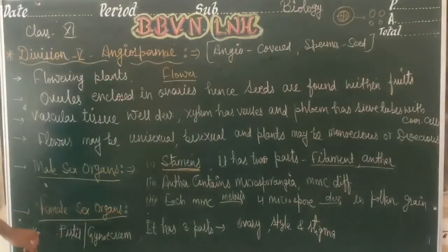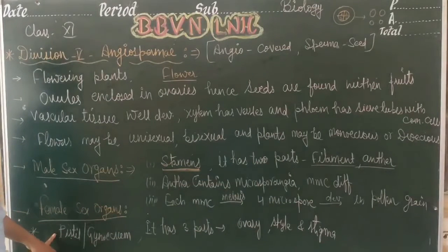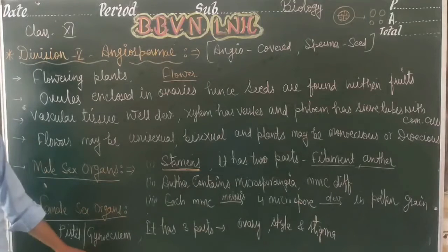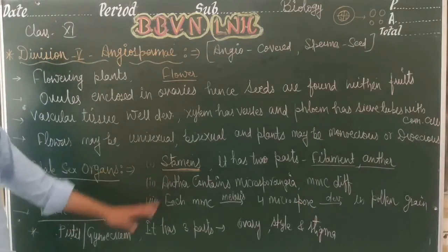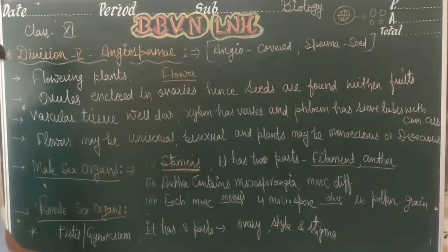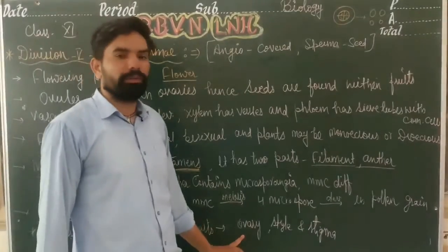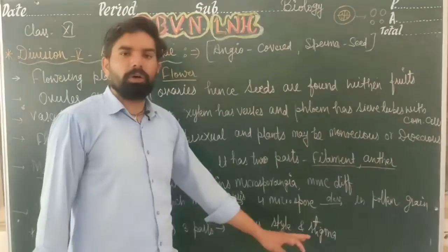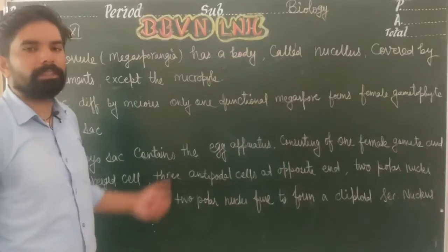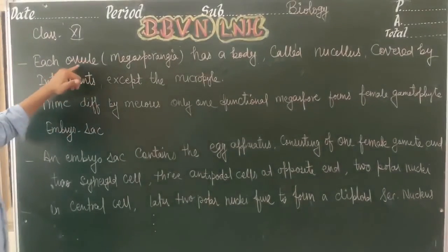Next are female sex organs. Female sex organs in plants, which you have also studied in 10th grade, are known as pistil or gynoecium. The male part is stamen and the female part is pistil. Pistil has three parts: ovary, style, and stigma.